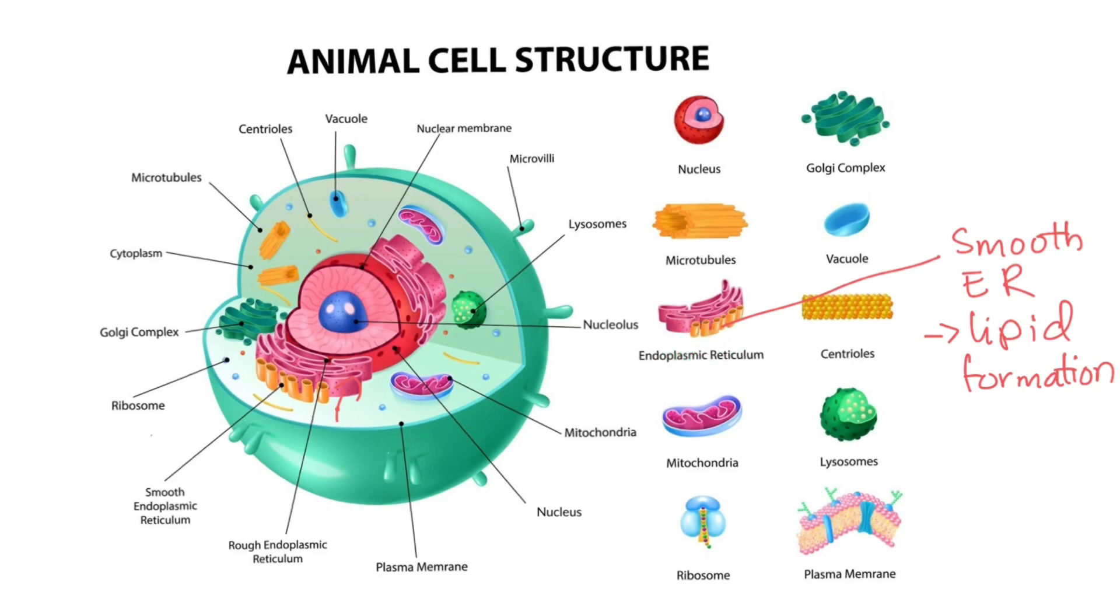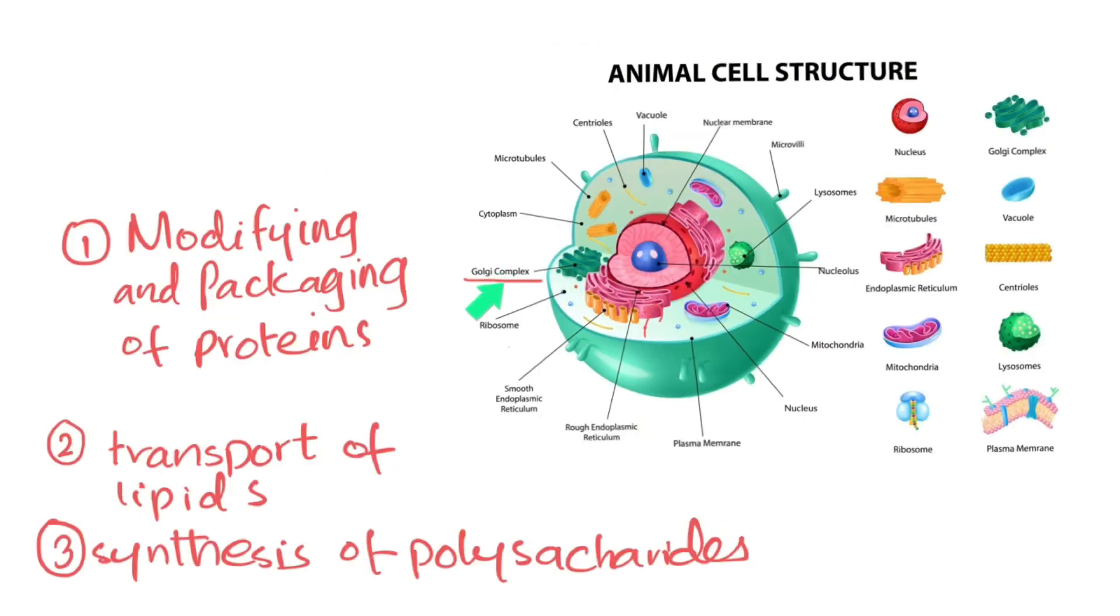The Golgi complex or Golgi apparatus is connected with ER. It is involved in modifying and packaging of proteins coming from ER so that they can function in the body. Moreover, it is also involved in transport of lipids and synthesis of polysaccharides.